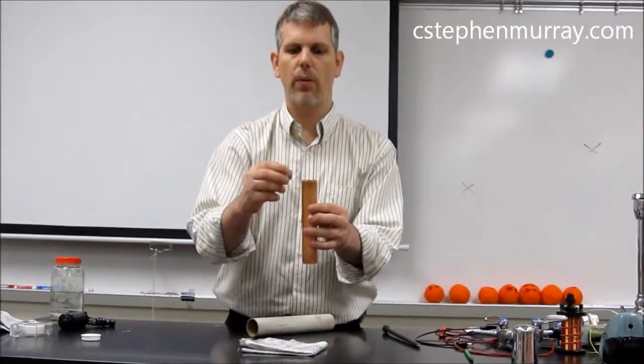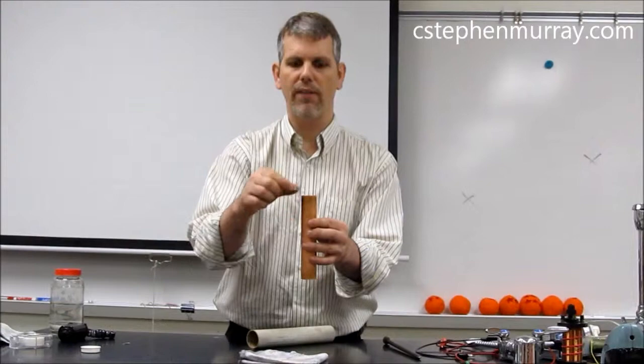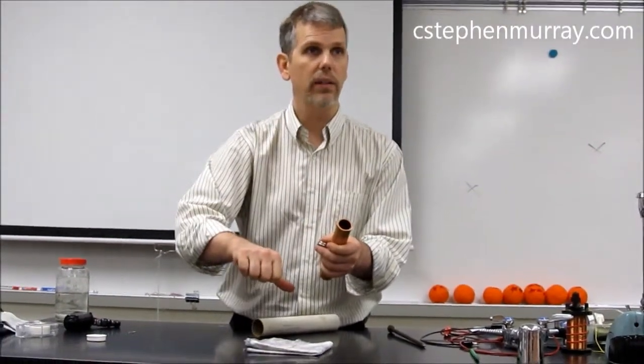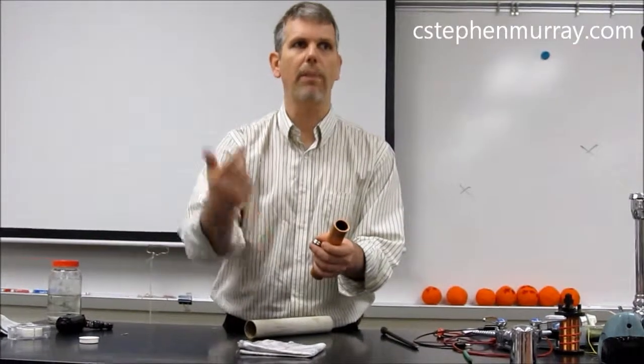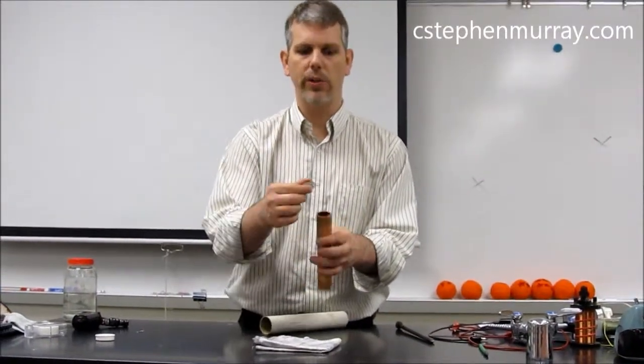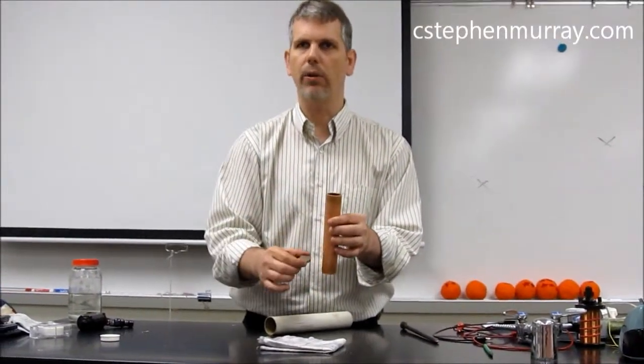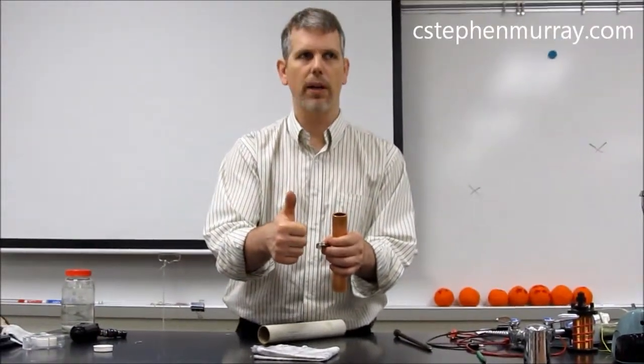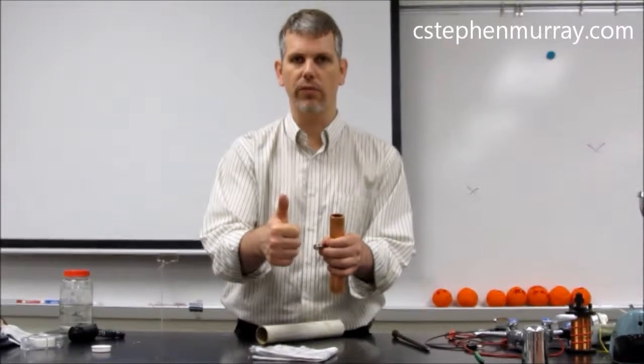Now, why does it not just stop? Well, if this slowed down and stopped, then all of a sudden, there wouldn't be a moving magnet. And then the induced current would stop, and it would speed up again. So, as you saw when you look down the tube, it comes to equilibrium, where the force down due to gravity is opposed equally by the force trying to keep it up of the induced force.